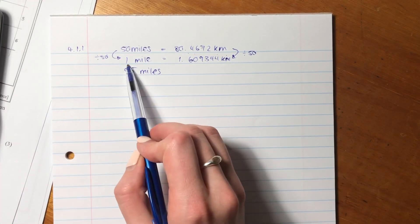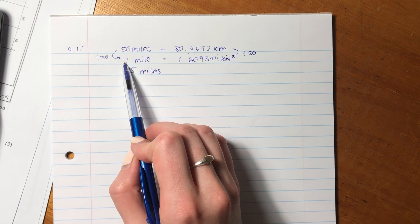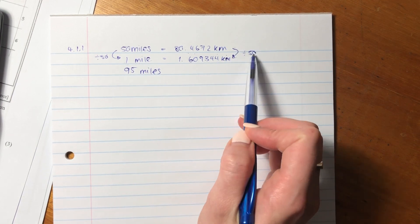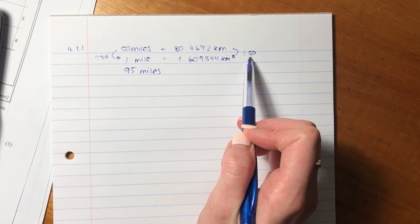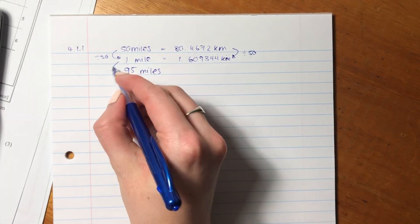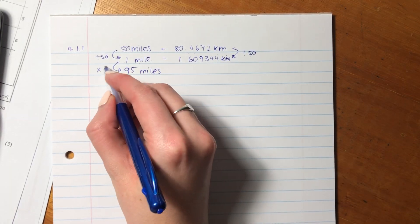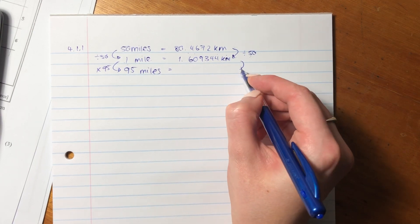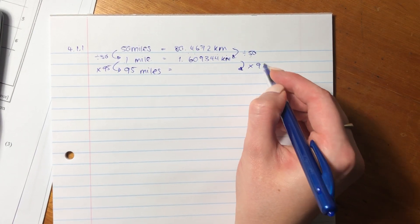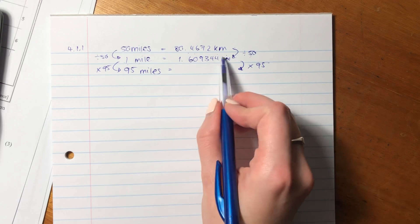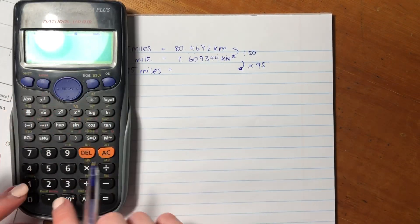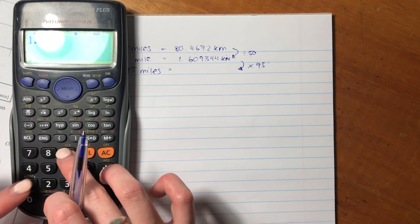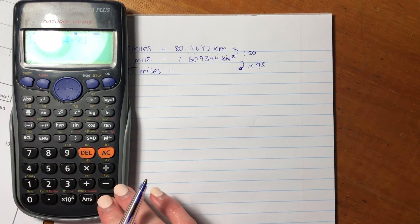The way we do that is to say, what did we have to do to that side to get to one mile? We divide it by 50. We do exactly the same on the other side. So test that on your calculator. Then we say, but now we want to go to 95 miles. So we're going to times that side by 95, and we're going to times this side by 95. So we say 1.609344 times by 95.